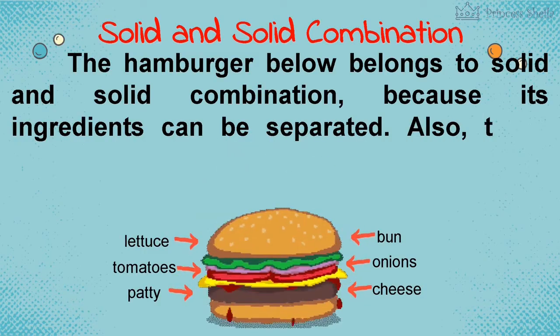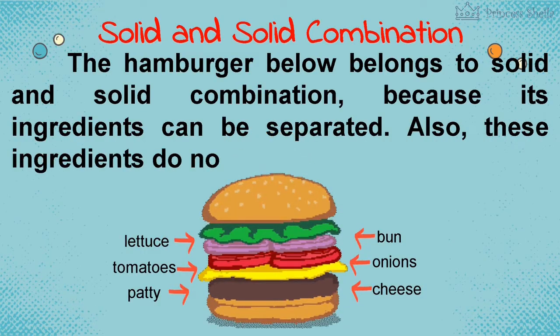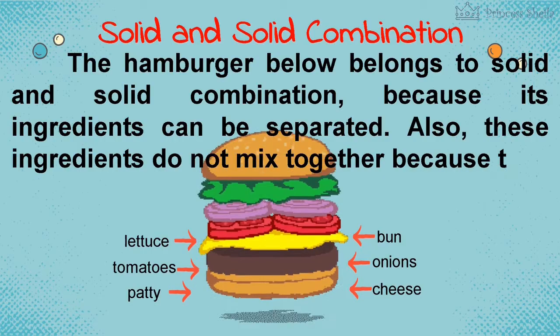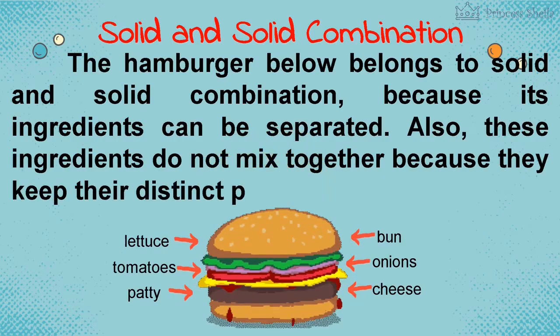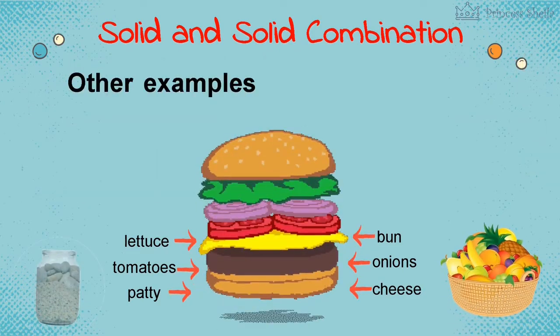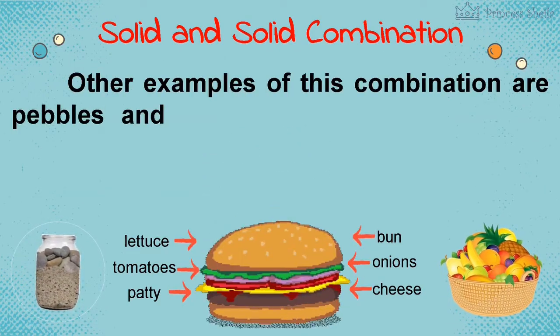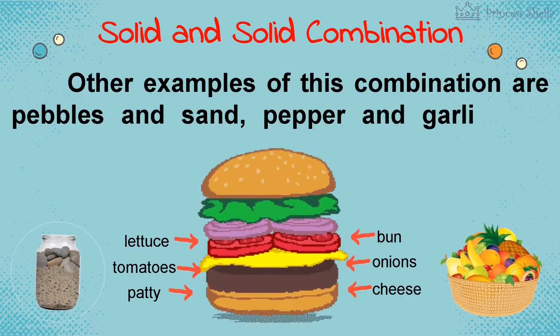Also, these ingredients do not mix together because they keep their distinct property. Other examples of this combination are pebbles and sand, pepper and garlic, and fruits in a basket.